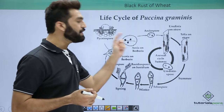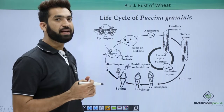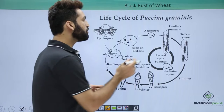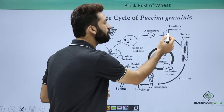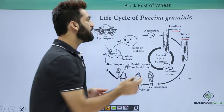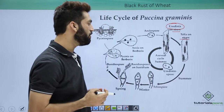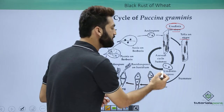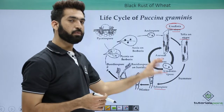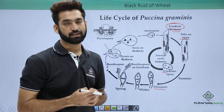Let us understand what is happening in the Puccinia life cycle, which is called black rust of wheat. First, consider the wheat straw. Two types of spores are produced on wheat: urediniospores and teliospores. Both of these spore types are formed while Puccinia is on wheat.